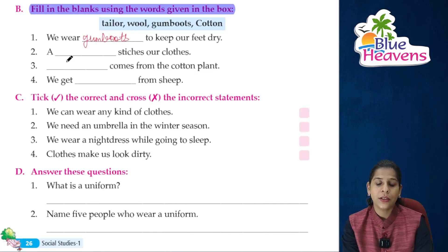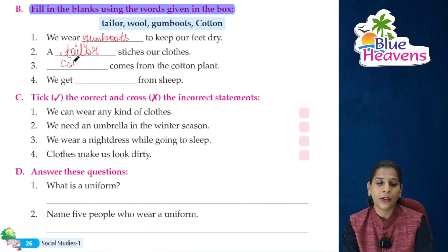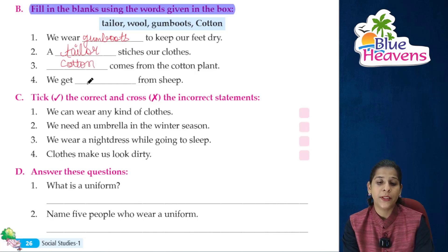Continuing fill in the blanks: Blank stitches our clothes — answer: tailor. Blank comes from the cotton plant — answer: cotton. We get blank from sheep — answer: wool.